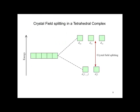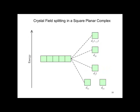This diagram shows the crystal field splitting in a tetrahedral complex. Notice that it is the opposite of the octahedral. Crystal field splitting in a square planar complex is even more complex.